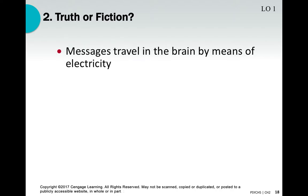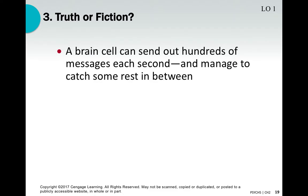Truth or fiction: messages travel in the brain by means of electricity. That's true — there's reportedly enough electricity in our brains to power a light bulb. When neurons fire it's an electrical-chemical impulse. Another truth or fiction: a brain cell can send out hundreds of messages each second and still manage to catch some rest in between. That's also true — action potential, resting potential, neurons fire but then must reload and pause during the refractory period.